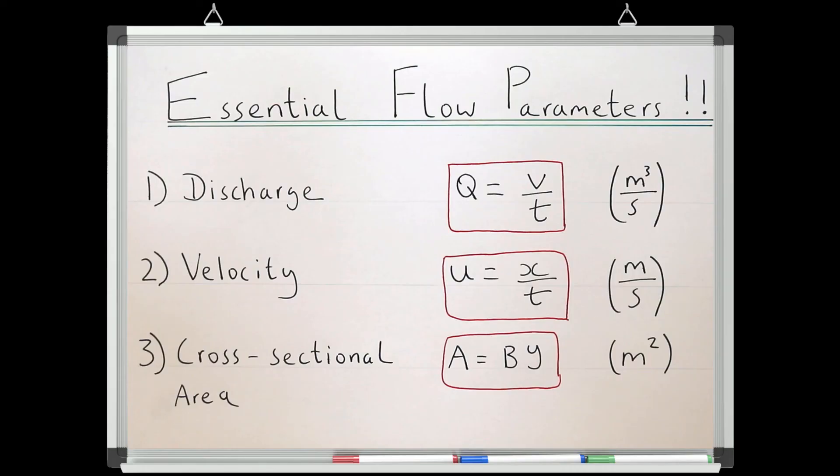Hopefully, we can see that by being able to define these three essential parameters, we can begin to describe what we are seeing when we observe moving water, and start to think of how we could design a system at a given discharge to give us either the velocity we want or the area we want.